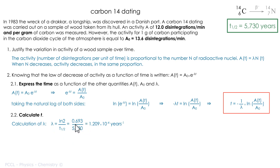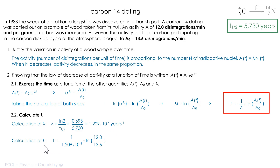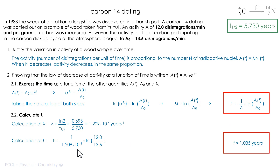Lambda equals 0.693 divided by 5730, expressed in per year. With lambda known, A(t) is 12 disintegrations per minute and A₀ equals 13.6. I don't need to change units here because whatever the units, the ratio 12/13.6 will always be the same as long as I am consistent. My calculator gives me approximately 1035 years. The wood that was used was cut around 948. The exercise is over.